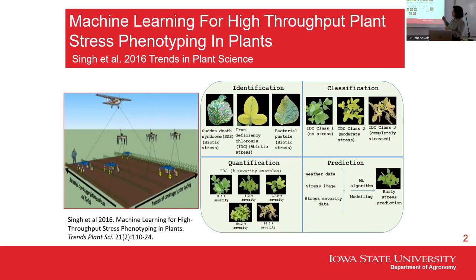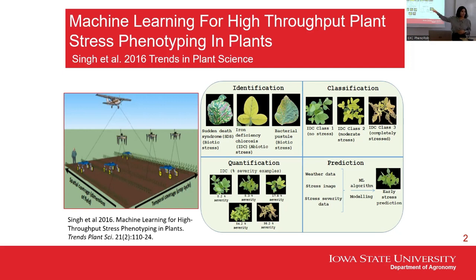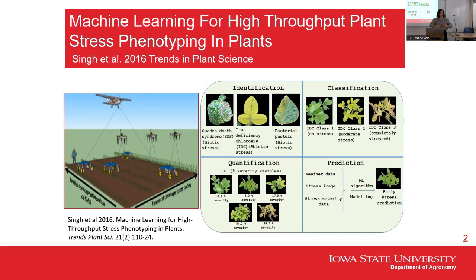We came up with the ICQP paradigm. If a farmer is interested in identifying stress in his field, he or she can fly a drone, and if it has vision, it can identify a stress — which stress it is. Classification means the farmer already knows they have iron deficiency chlorosis and wants to know whether it is medium or small, so they can also classify.